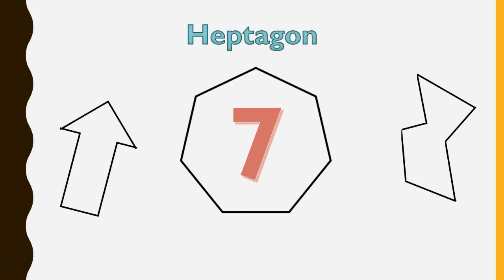And this is a heptagon. Heptagons get even more interesting — the more sides you can add, the more interesting the shapes can be. A typical arrow is actually a heptagon: one, two, three, four, five, six, seven.